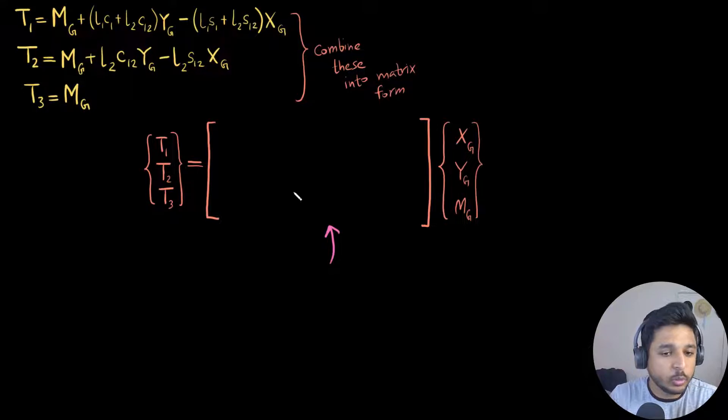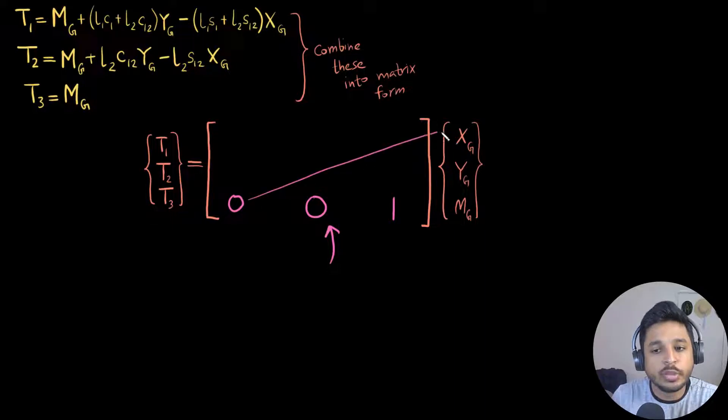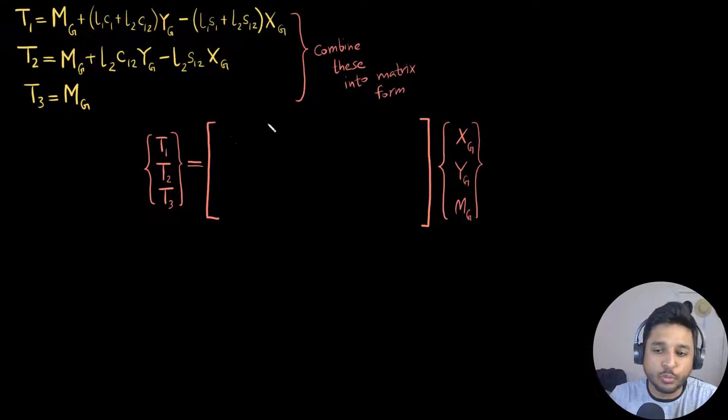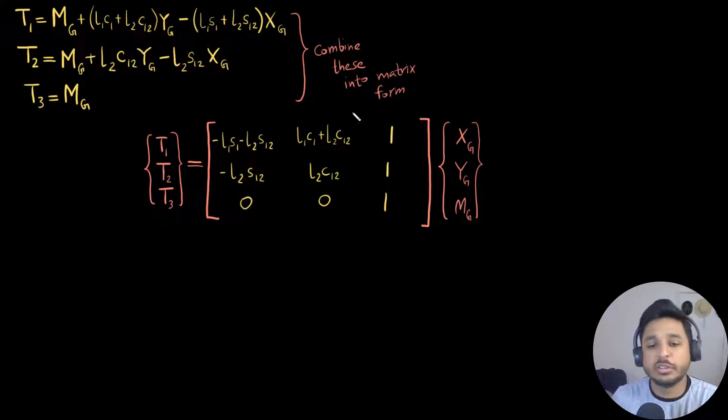Let me just do it quickly for the third row. For t3, I know t3 has zero component of xg, so I can just write zero and zero component of yg, and for mg it is one. So once I multiply zero with xg, zero with yg, and one with mg, I get t3 equals to mg. In a very similar manner, I'm going to fill out the rest of these terms in this matrix. So I get these terms, which is a three cross three matrix.